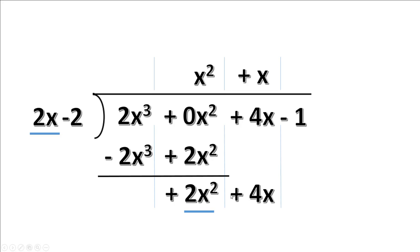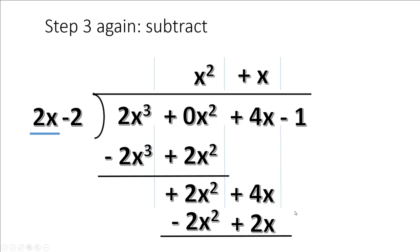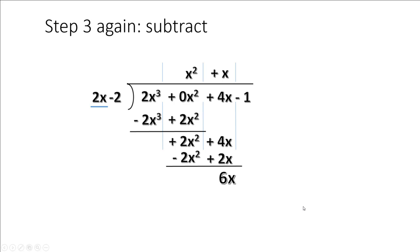Let's repeat the process with our new binomial. 2x times x is 2x squared. Step 2 again: multiply 2x squared minus 2x, then we subtract. Switch the signs. Had a little shrinking here. Let's bring down the next guy.